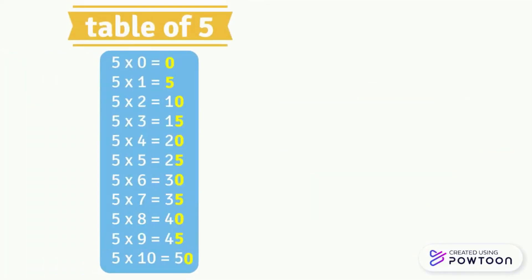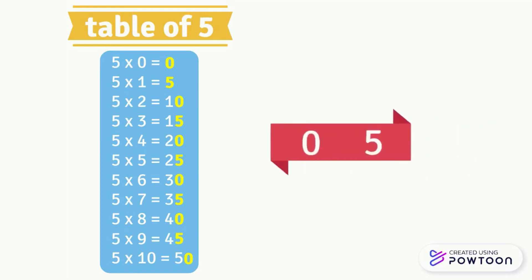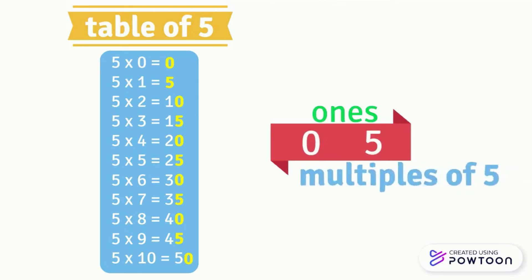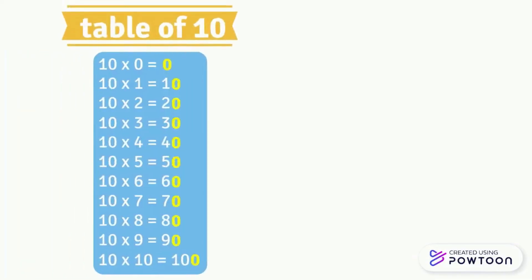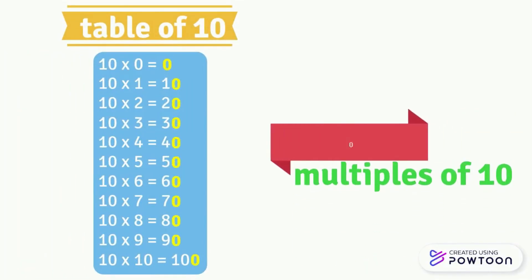Now observe the table of 5. Notice that the results have 0 or 5 in the ones place. This means that multiples of 5 have 0 or 5 as their ones digit. To know the multiples of 10, observe the table of 10 — notice that all multiples of 10 have 0 in the ones place.